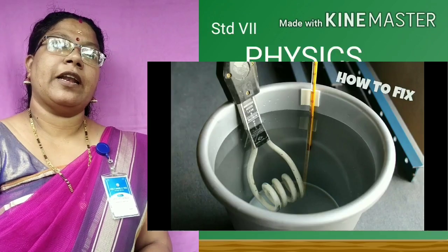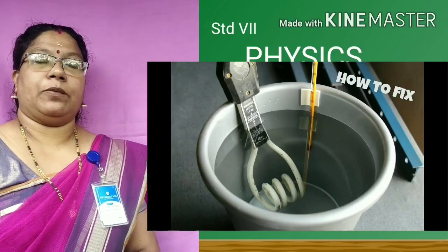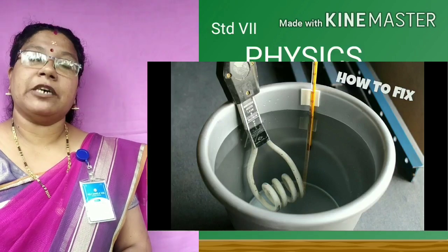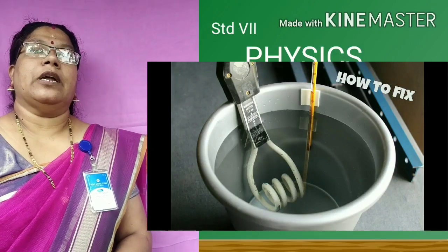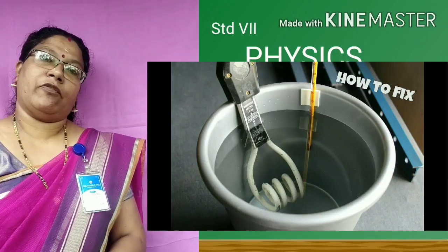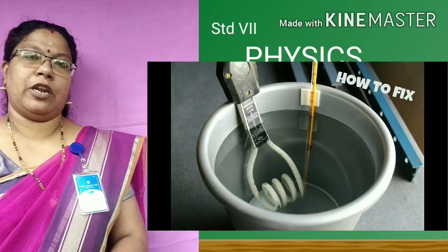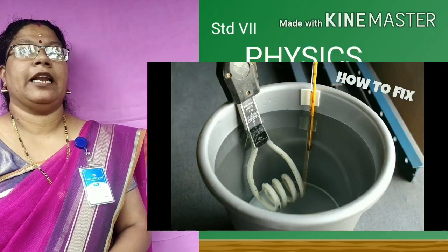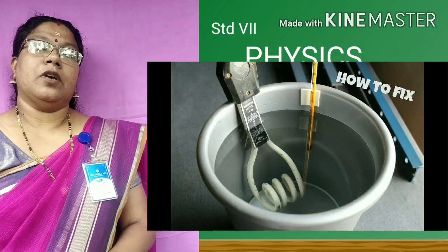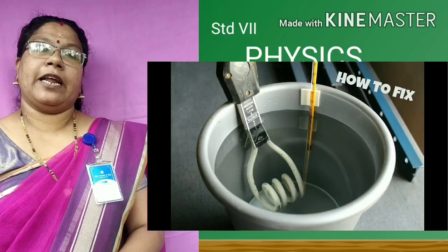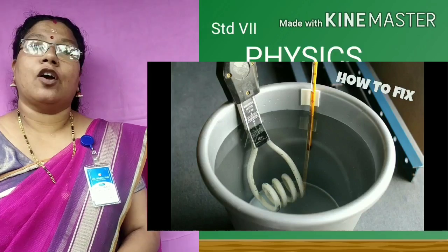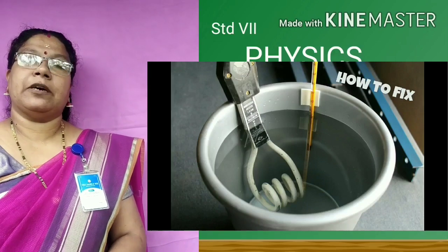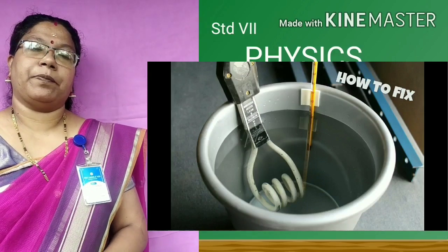The third application given in your textbook is that of an immersion rod. An immersion rod is used to increase the temperature of water or any other liquid. We usually use an immersion rod to heat water taken in a container or a bucket. The immersion rod has a coil of wire. When electricity passes through this coil of wire, the coil becomes hot.